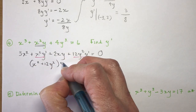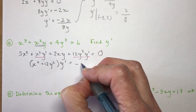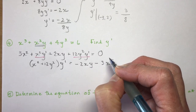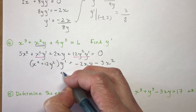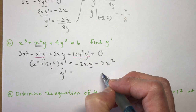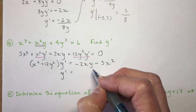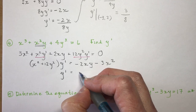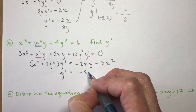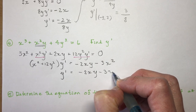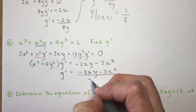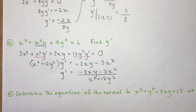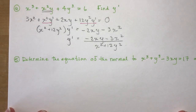Identify the y′ terms and factor: (x² + 12y²)·y′ = −2xy − 3x². Divide both sides, so y′ = (−2xy − 3x²) / (x² + 12y²). You could factor out a negative, but since you'd plug in x and y values anyway, it's fine to leave it as is.